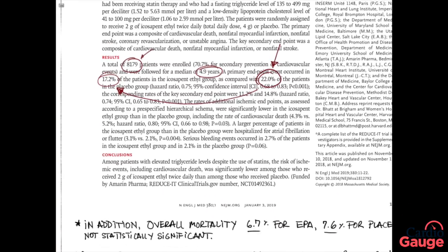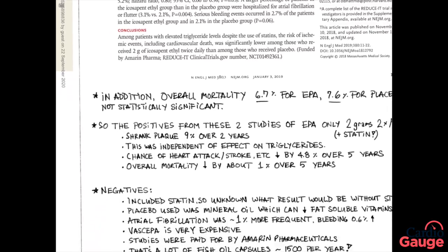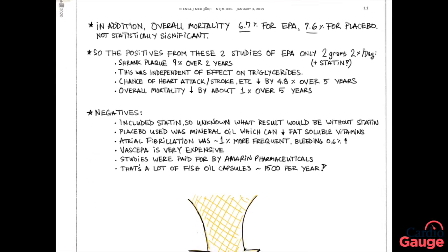In addition, importantly, in the REDUCE-IT trial there was a decrease in overall mortality, which is pretty much the most important parameter there is since we all just would like to live longer and feel better. For the people who got the Vascepa or EPA, there was a 6.7 percent chance of overall mortality versus 7.6 percent for the placebo group. So a decrease of almost 1 percent. This wasn't quite statistically significant, but it was close.